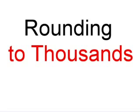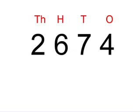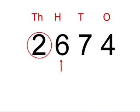Today, we will be talking about rounding to thousands. The number we will be looking at is 2674. When rounding to the closest thousands, we need to look at our number in the hundreds column. If the number is between 0 and 4, we round down. If the number is between 5 and 9, we round up.